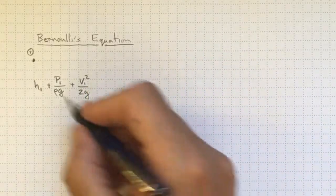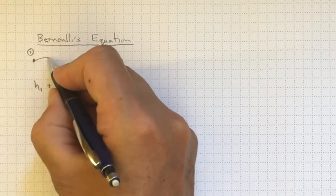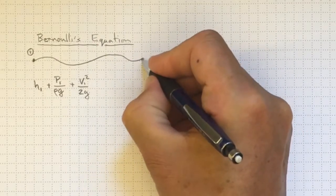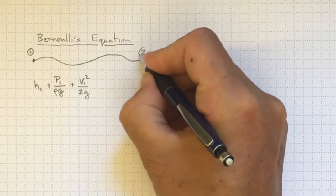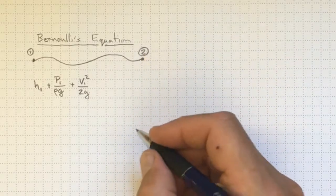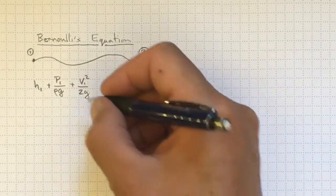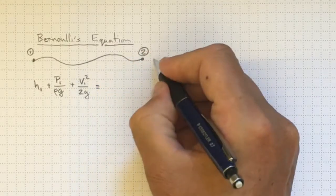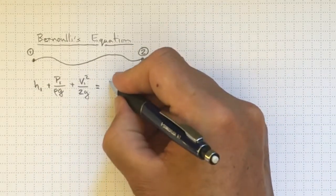Now if we follow that particle as it travels along some streamline, following it as it goes through time, it'll eventually get to location 2. And if there have been no losses or gains of energy, then the total amount of energy it's got at location 2 will be the same as the energy it had at location 1.